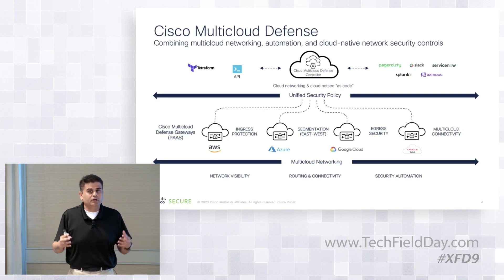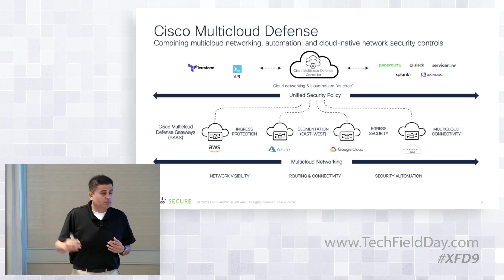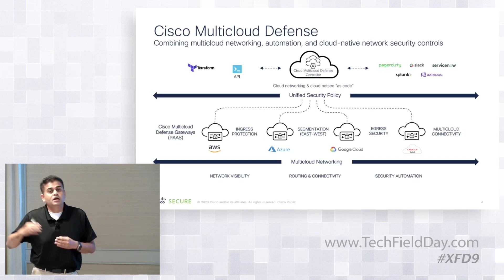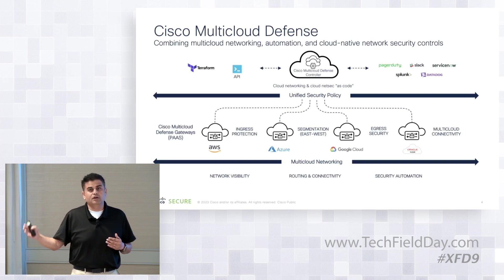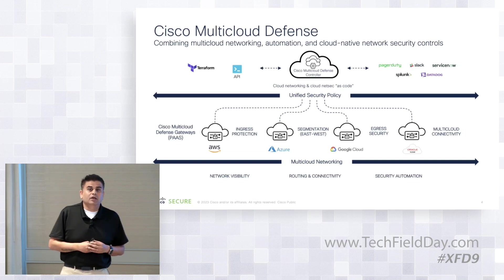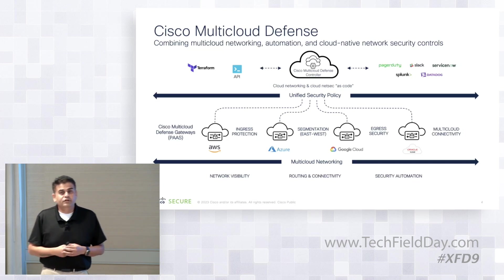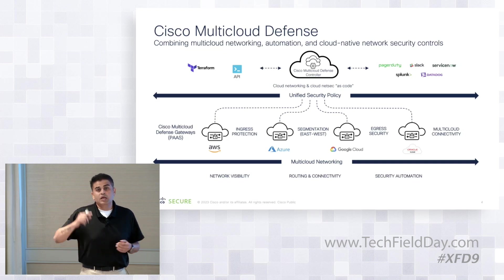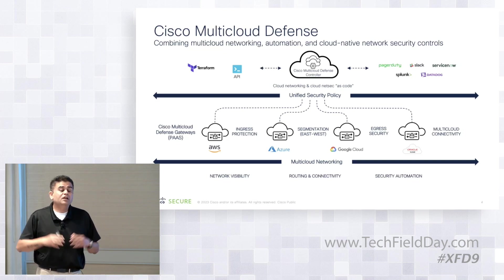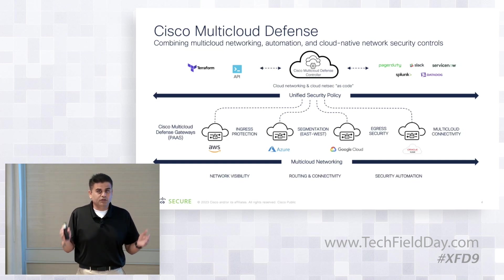We also insert gateways into your accounts using an entirely automated workflow. You just specify where you want to deploy the gateways, and then the controller talks to your cloud infrastructure and deploys them. The biggest pain point when inserting security appliances in the cloud is traffic steering, because routing can be pretty complex. The multi-cloud defense controller takes care of that as well. Later this year, we are also adding multi-cloud networking, which will help you connect different clouds together using a secured connection. Everything in the UI can be fully automated using Terraform — we provide Terraform providers and Terraform templates.